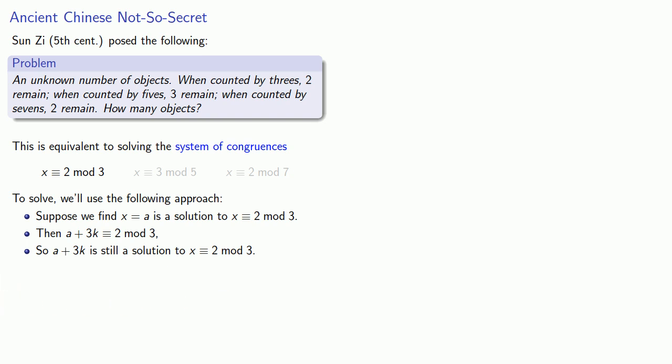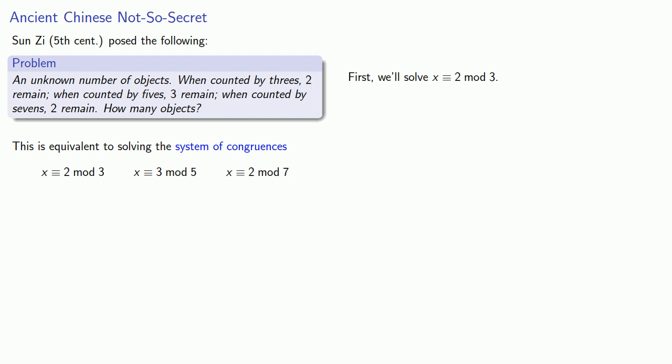Now we could start to bring in the parts of the problem that we ignored, starting with x congruent to three mod five. Since a plus three k is a solution to x congruent to two mod three, we'll find k where a plus three k is also a solution to three mod five. And once we have that, we'll lather, rinse, repeat. So first we'll solve x congruent to two mod three. After staring at this very complicated equation, we realize that x equals two is a solution, and so all solutions will be x equal to two plus three k.